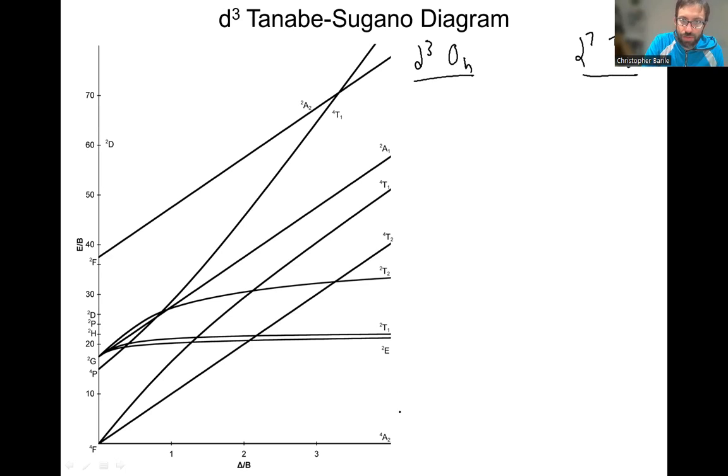All right, so the first thing we want to do is review the different axes here. We have ligand field strength delta in units of B, the Racah parameter. So this is unitless because we're dividing by B. These are both energy units here, but B is a measure of electron-electron repulsion, and E is also in the same units. This is weak field ligands on this side, strong field ligands over here, and then we have when we have no ligands, zero ligand field strength. We're at the free ion states, so we have different atomic term symbols here instead of these other symbols for molecular term symbols.